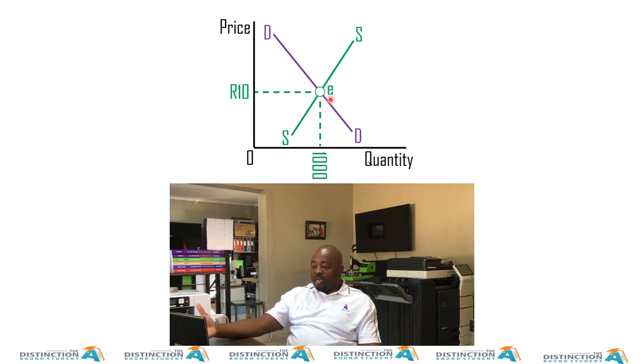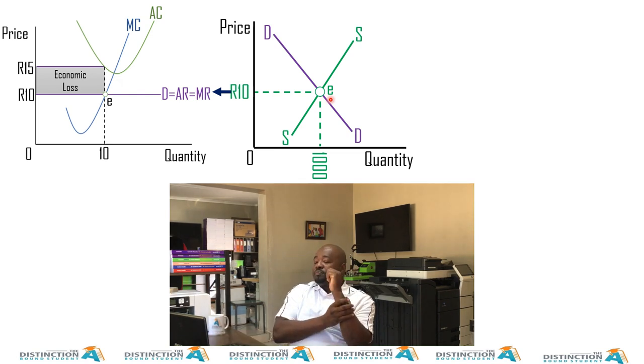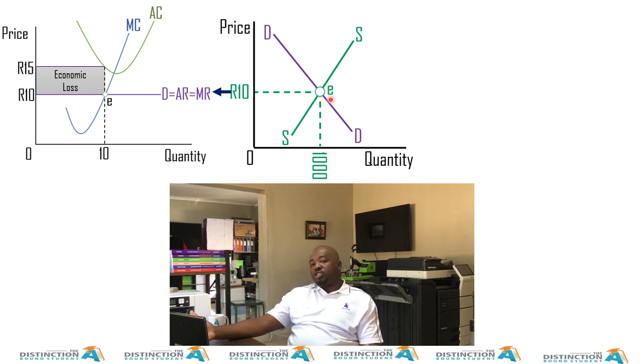This one that I drew here is for the entire industry. We want to show you how the individual will make normal profits in the long run. This being our market forces and everything, let me read what you see here. We have forces of demand and supply causing the price to be 10 rand and causing the quantity to be 1,000. This 1,000 means all the firms in this industry are producing 1,000 units.